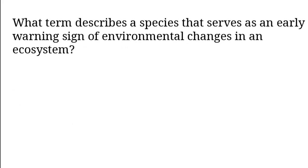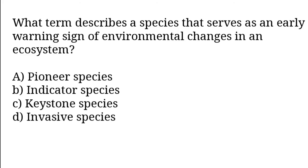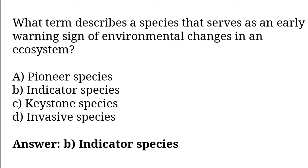What term describes a species that serves as an early warning sign of environmental change in an ecosystem? Options: Pioneer species, indicator species, keystone species, invasive species. So the correct answer is option B. Indicator species.